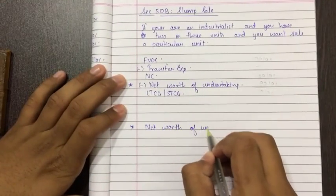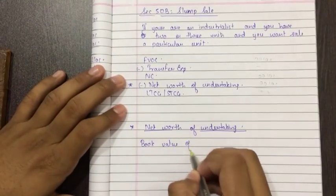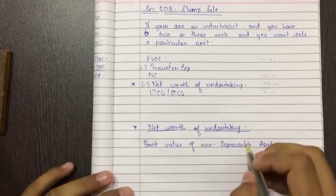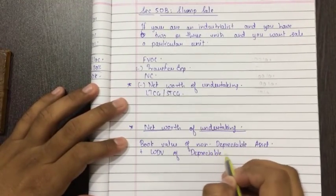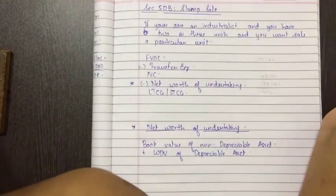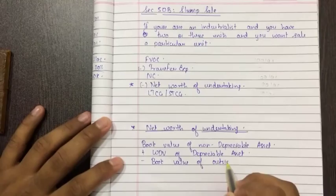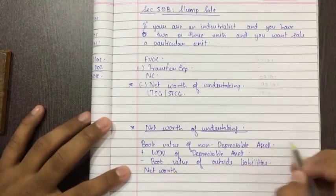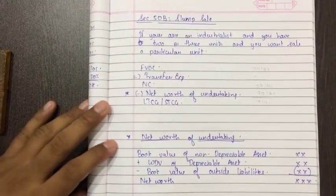Let's see what is net worth of undertaking. Net worth of undertaking: how to calculate? Book value of non-depreciable asset - non-depreciable assets means what? Land, building and all, debtors also. Plus WDV of depreciable asset - WDV of depreciable asset means if the provision of depreciation is given on the credit side, net it off and bring the actual value of the depreciable asset. And then less book value of outside liabilities. Then you will get net worth.